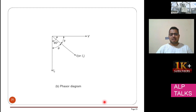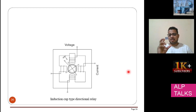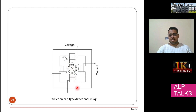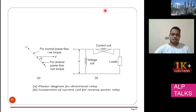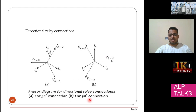This is the phasor diagram for the directional relay, where V and I are shown, and the current is lagging by 90 degrees. I1 is the secondary current and I2 is the compensating circuit current. Another version is the induction cup type directional relay, which has two different phases. One is current and another is voltage. You also have reverse and negative torque versus positive torque. The circuit diagram shows a voltage coil and current coil. There are two phasor diagram connections — type A for 30-degree connection and type B for 90-degree connection.